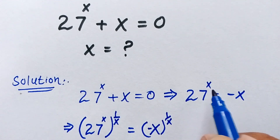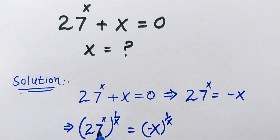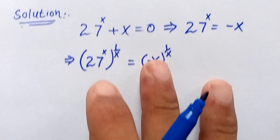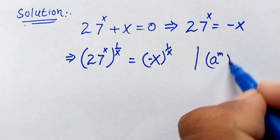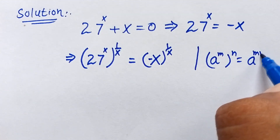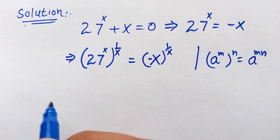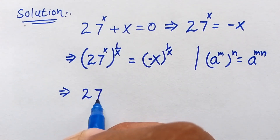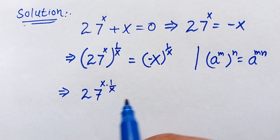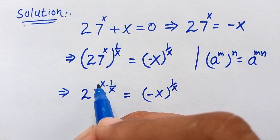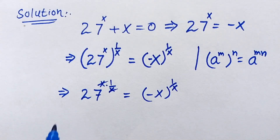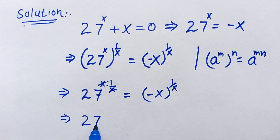We multiply 1 over x on both sides, so this becomes 27 to the power of x, to the whole power of 1 over x, is equal to minus x to the power of 1 over x. We know that a to the power of m to the whole power of n equals a to the power of m times n. Applying this, we get 27 to the power of x times 1 over x, which equals minus x to the power of 1 over x. The x cancels, so this becomes 27, which is equal to minus x to the power of 1 over x.